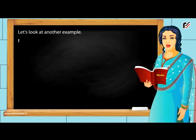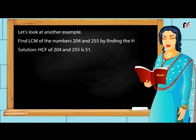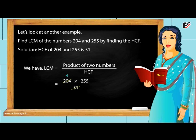Another example: Find the LCM of 204 and 255 by finding the HCF. HCF of 204 and 255 is 51. LCM = (Product of two numbers) ÷ HCF = (204 × 255) ÷ 51 = 1020.